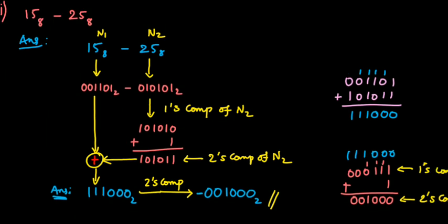Either you can represent the result as the two's complement of the negative number or directly as a negative number — both are correct. You can represent either one of these.